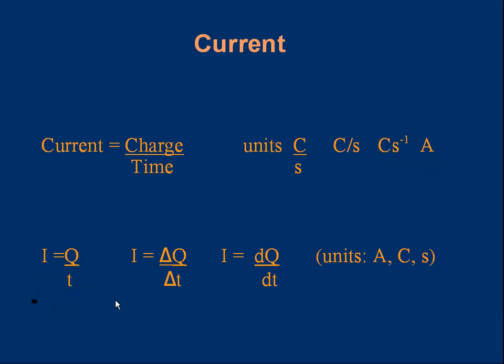You'll also see this notation used sometimes: I is delta Q over delta T. The triangle is actually a capital Greek letter delta, and it means a change or difference. This means the change in charge, this means the change in time. Both formulas are equivalent. If you're familiar with calculus, you'll recognize that I is dQ over dt. But if you're not familiar with calculus, don't worry about that.